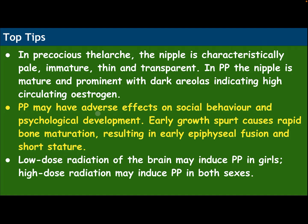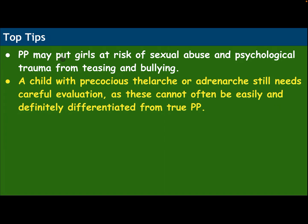Precocious puberty may have adverse effects on social behaviors and psychological development. Early growth spurt causes rapid bone maturation, resulting in early epiphyseal fusion and short stature. Low-dose radiation of the brain may induce precocious puberty in girls; high-dose radiation may induce it in both sexes. Precocious puberty may put girls at risk of sexual abuse and psychological trauma from teasing and bullying. A child with precocious thelarche and/or adrenarche still needs careful evaluation, as these cannot often be easily definitively differentiated from true precocious puberty.